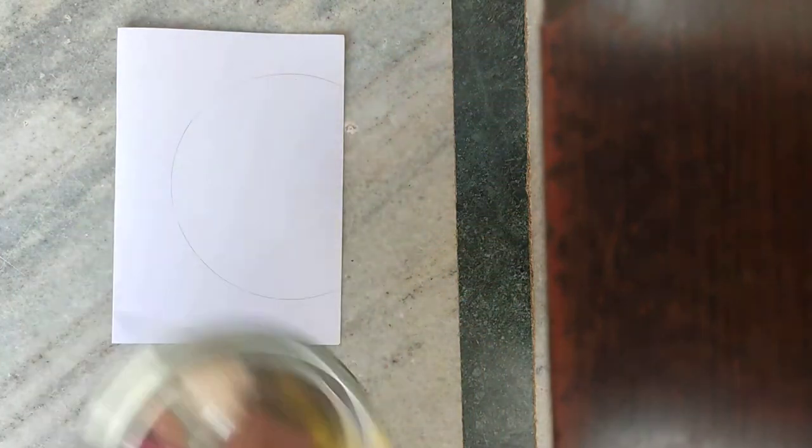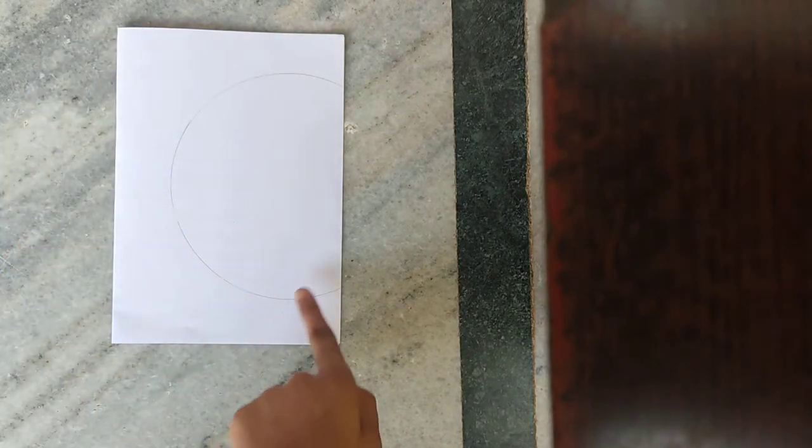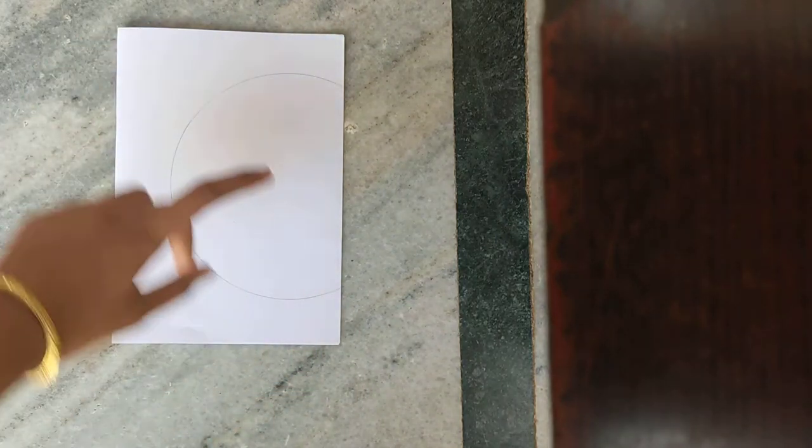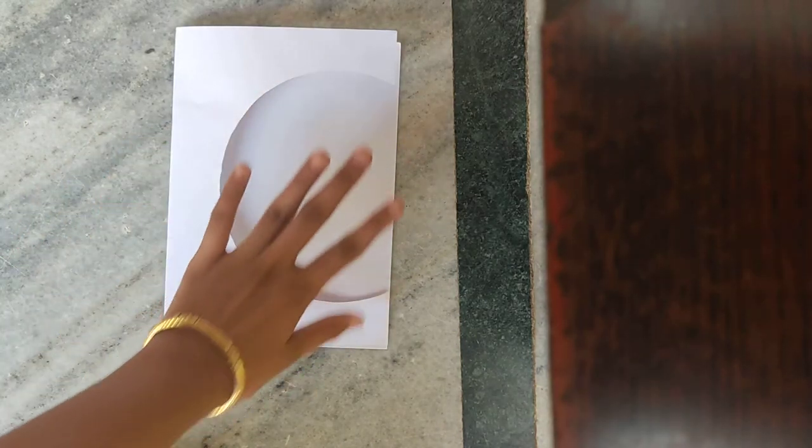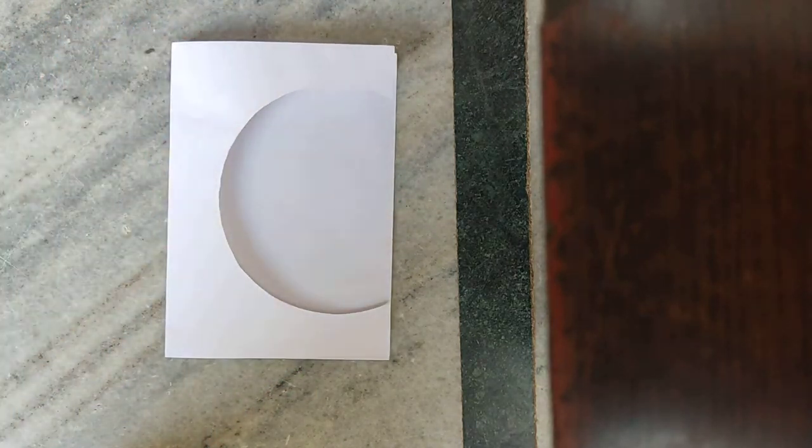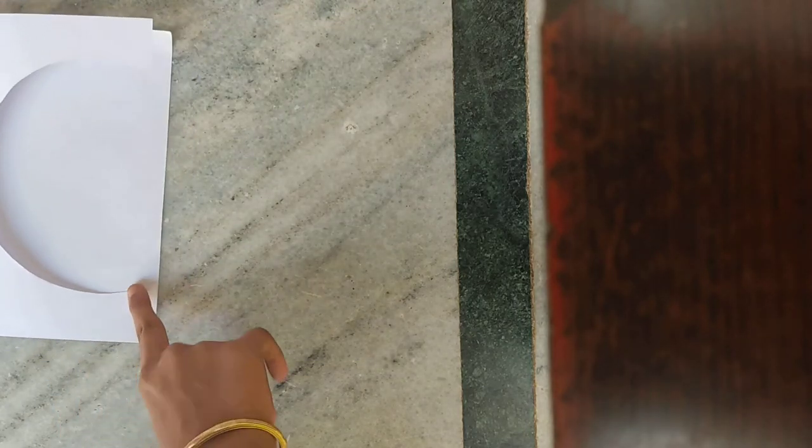Remove the container lid. You can see the circle part here, just cut this. I cut the circle part, let's go to the next step.